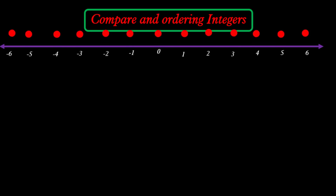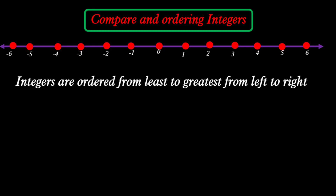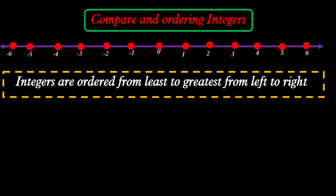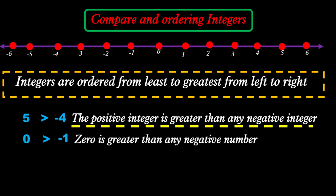Next, comparing and ordering integers. The main idea is that integers are ordered from least to greatest from left to right on the number line. For example, 5 is greater than negative 4 — 5 is positive and negative 4 is negative. So generally, any positive integer is greater than any negative integer. Also, 0 is greater than negative 1, meaning 0 is greater than any negative integer.